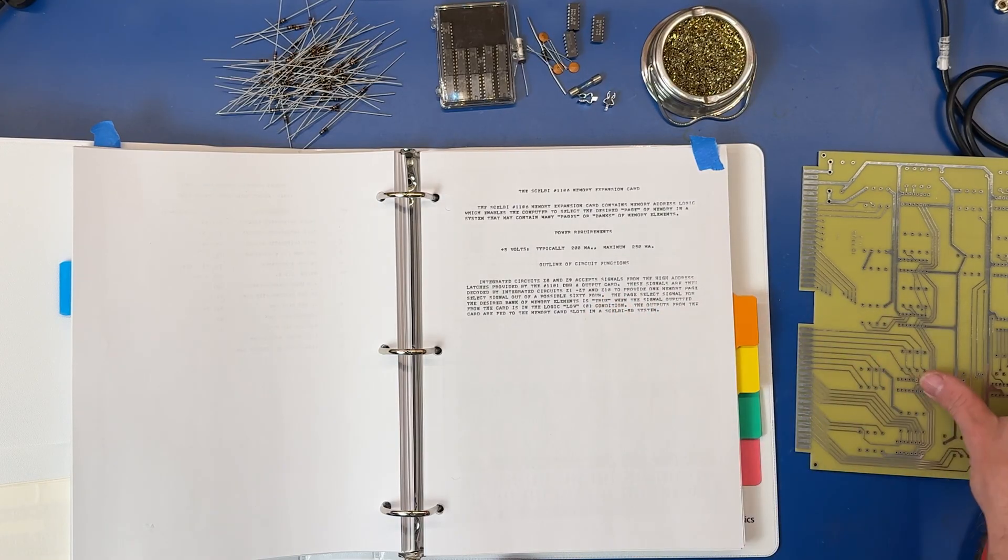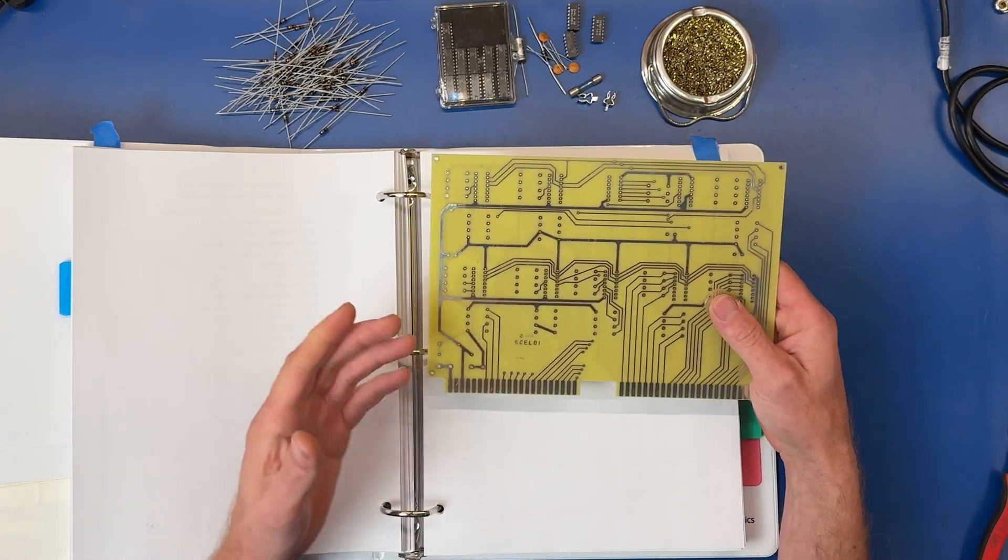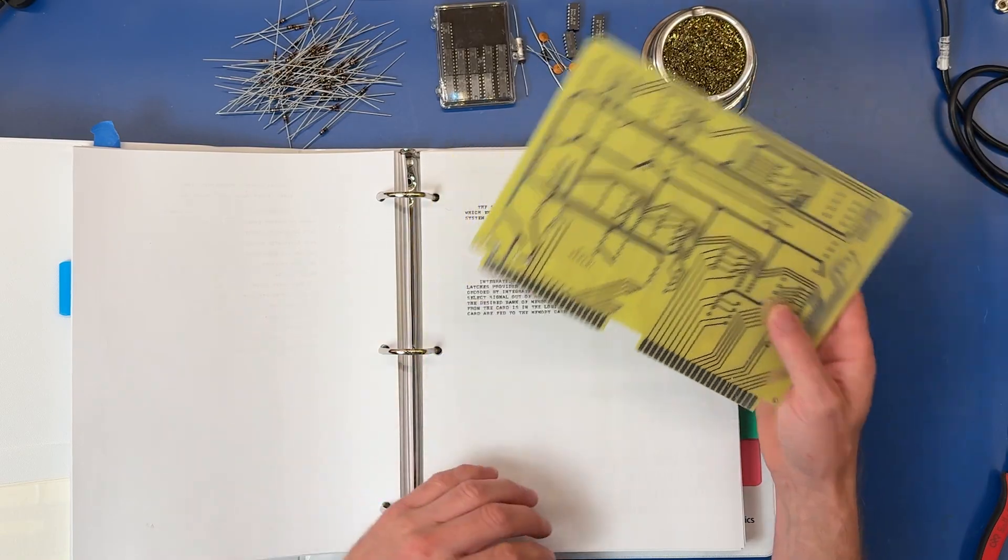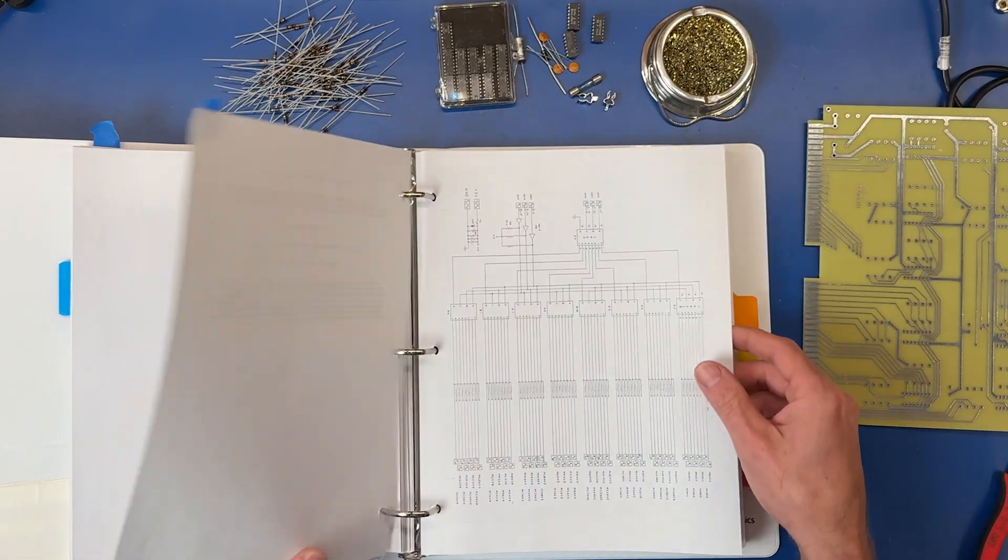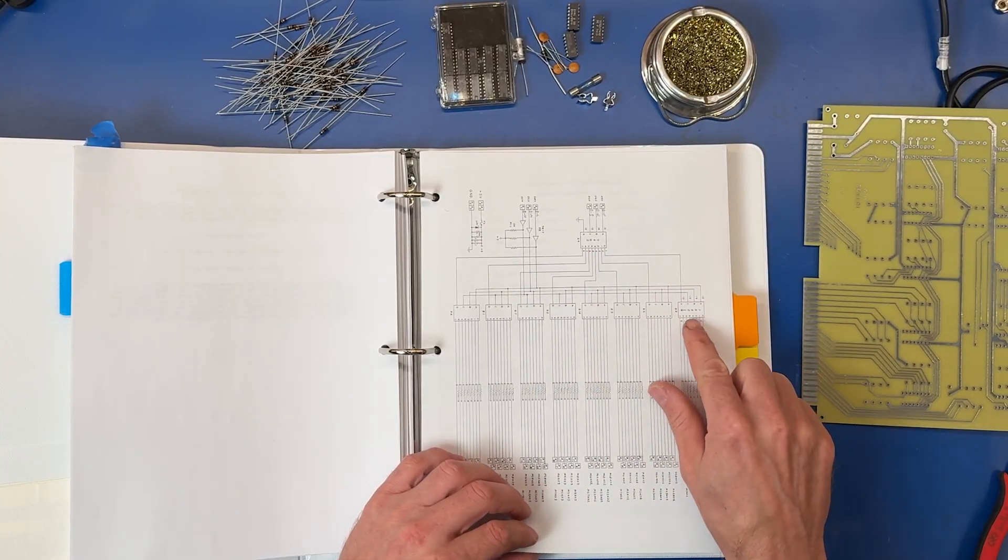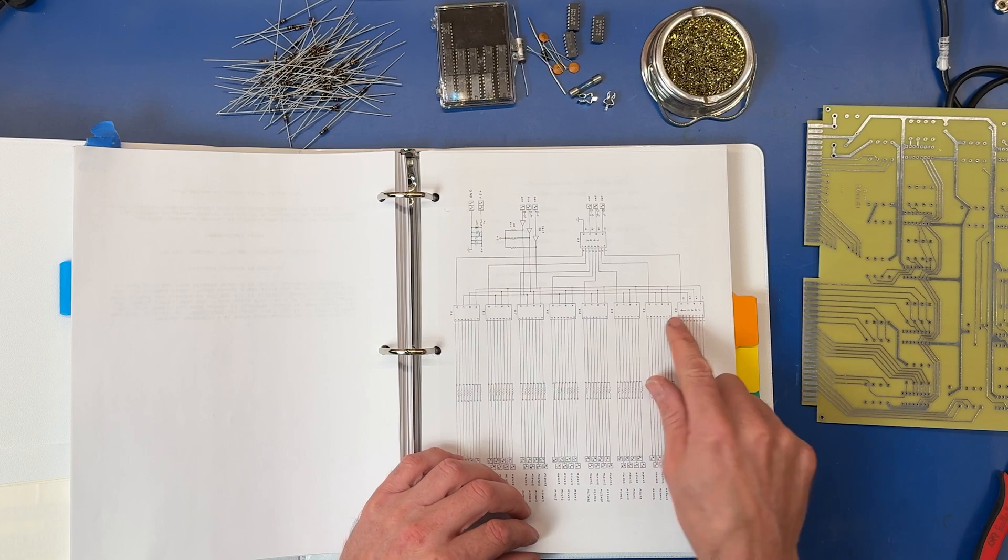And a little bit of how the card works. Basically it allows us to address up to 16k of memory. And the schematic for it - just a couple of latches and decoders. These 7442 decoders.